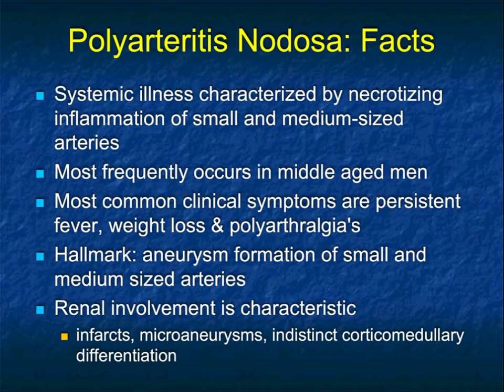If you don't think about vasculitis, the diagnosis will come late. It's really the excellent clinician who thinks about it. PAN is more frequently found in middle-aged men. Most common clinical symptoms are persistent fever, weight loss, and polyarthralgias — you can see why you'd be thinking about malignancy. The hallmark is aneurysmal formation of small and medium-sized arteries, particularly in the kidney.